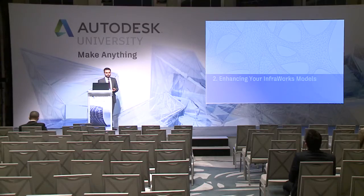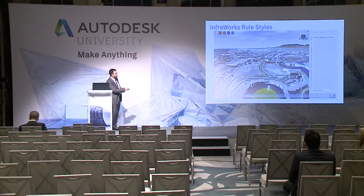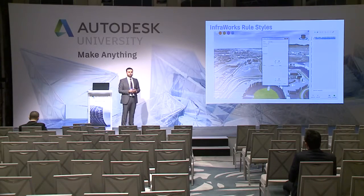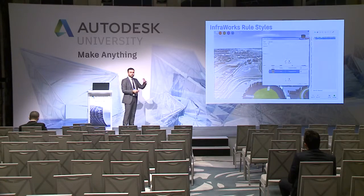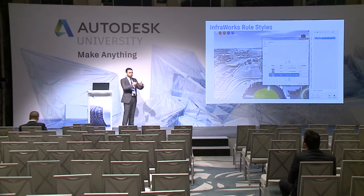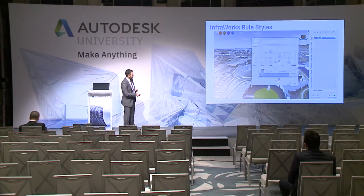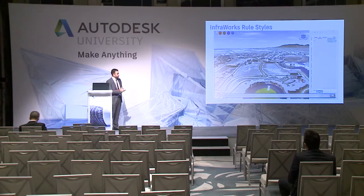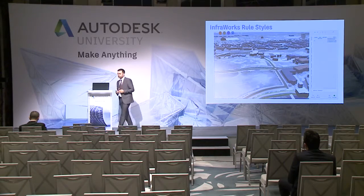What if I want to enhance my InfraWorks model specifically regarding buildings? We have something called rule styles, built into the software. You get building footprints coming from Model Builder or a GIS database, then create a rule style specifying, for example, that buildings 10 meters high have a certain type of facade, and buildings 20 to 30 meters have a different facade style — from within InfraWorks's huge library. You set all those parameters, hit run, and everything in the model updates. Buildings that had no facades will have one within a second.